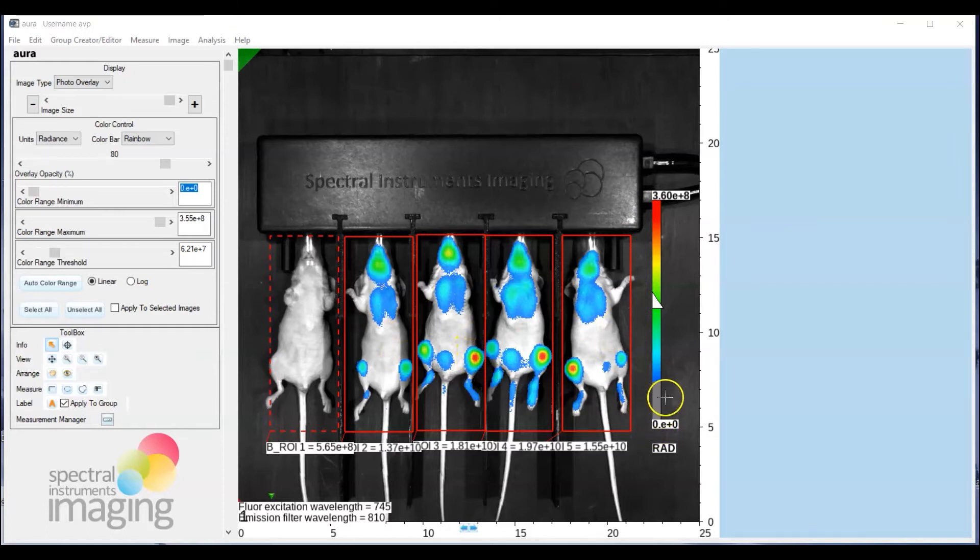So to find the threshold, simply go over to the display features. And you'll note that we have both the color range min and max of the calibration bar, and we also have the color range threshold.